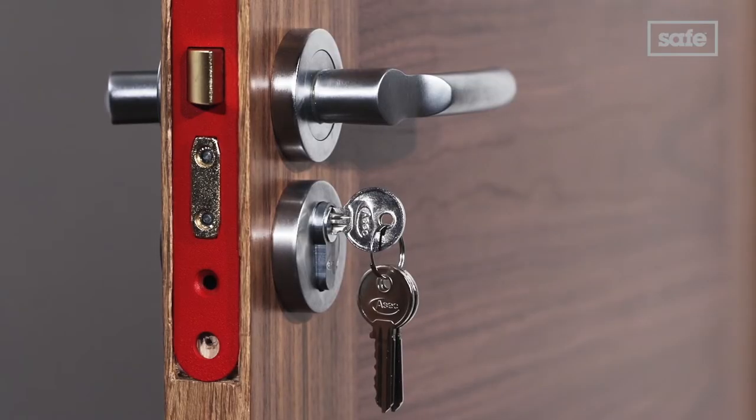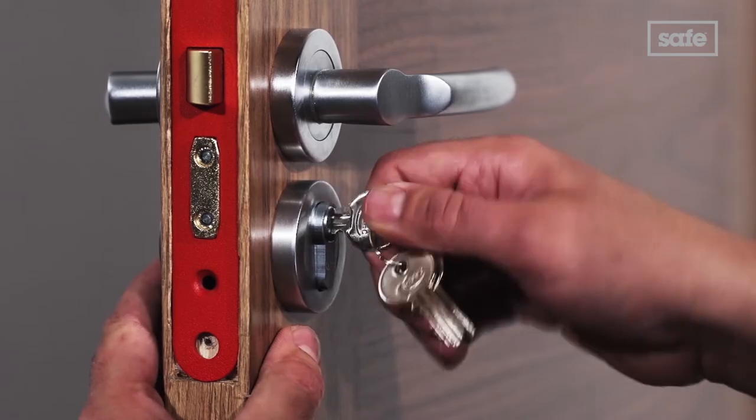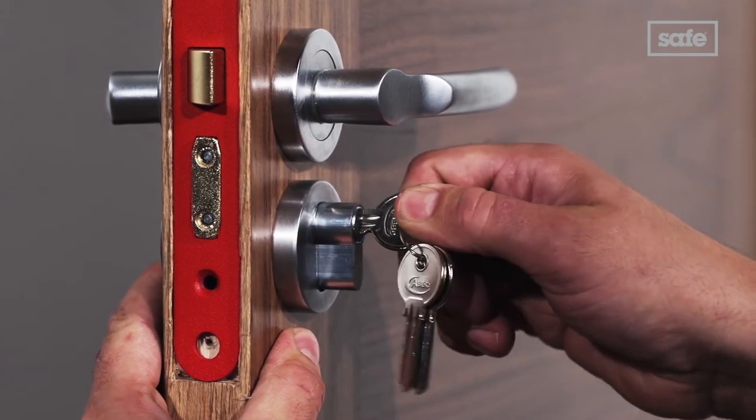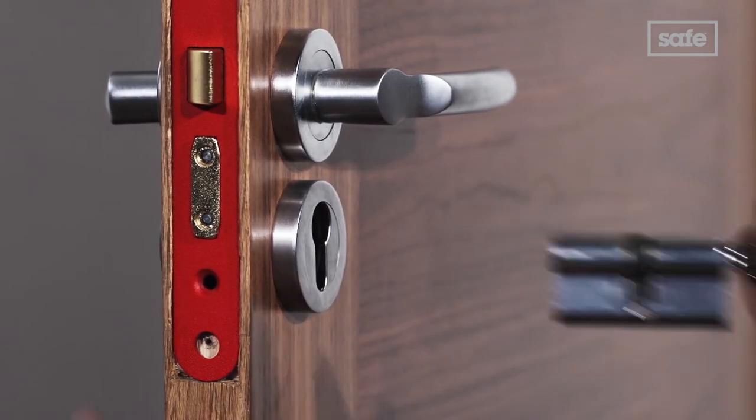Make sure the door is unlocked so the cam is in the correct place. Then remove the whole cylinder from the door. You can use some WD-40 to loosen if you need.